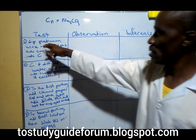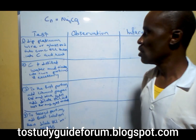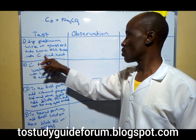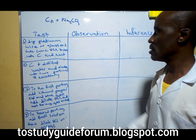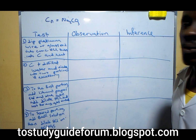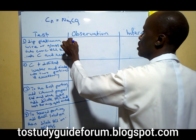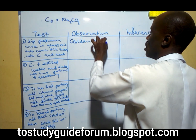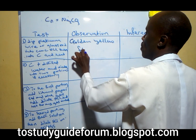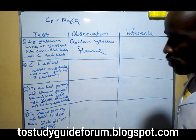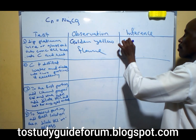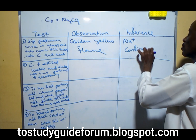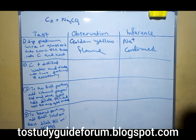In the first test we dip a platinum wire or glass rod into hydrochloric acid, then into C and heat. When we heat, we notice a golden yellow flame. This golden yellow flame confirms sodium ion confirmed.